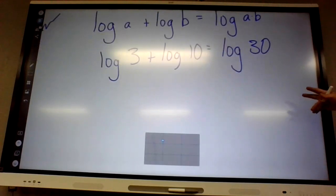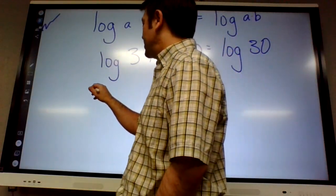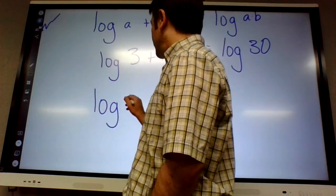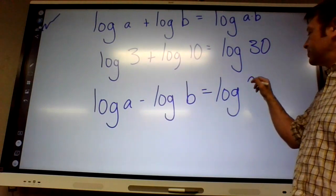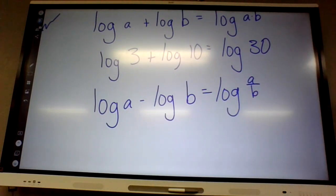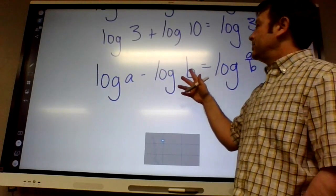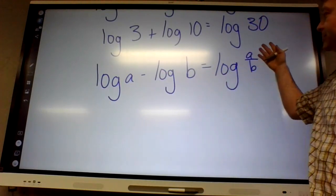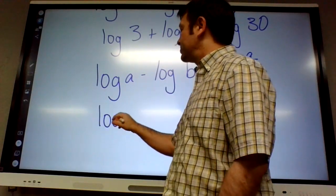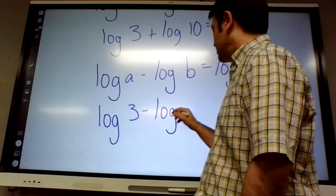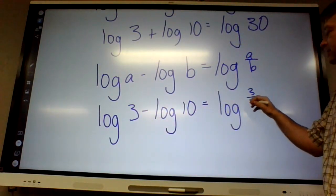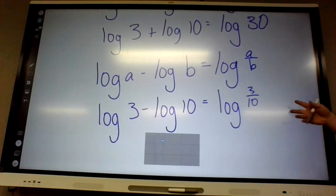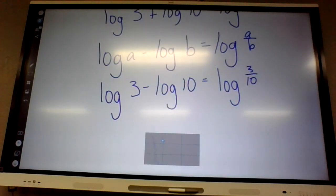Rule number two - maybe you guys can guess this before I even say it. If you do log a minus log of b, that equals log of a divided by b. So if it divides, you should divide it. If it doesn't divide, like let's use the 3 and 10 again, what's 3 divided by 10? Three tenths, or 0.3, same thing.